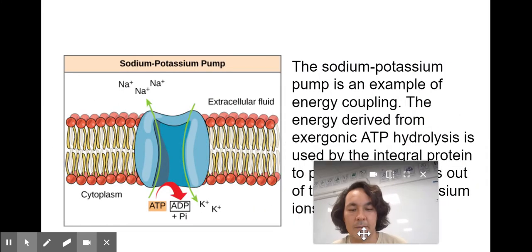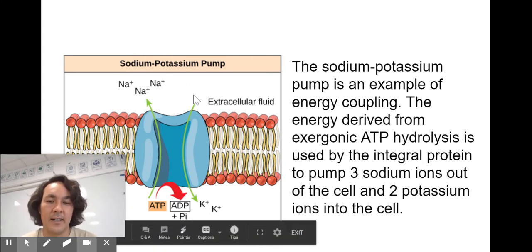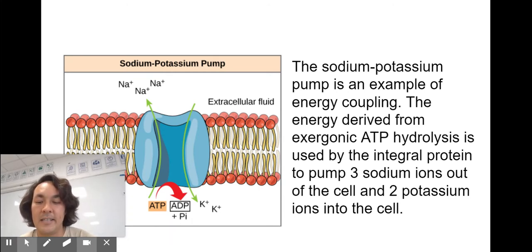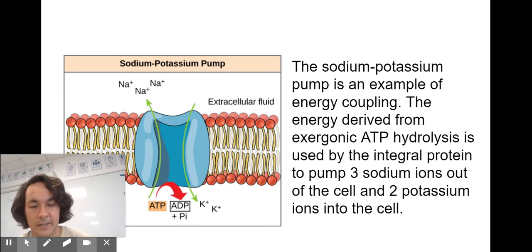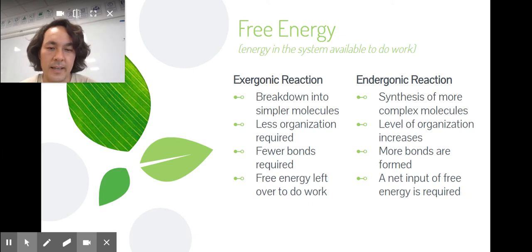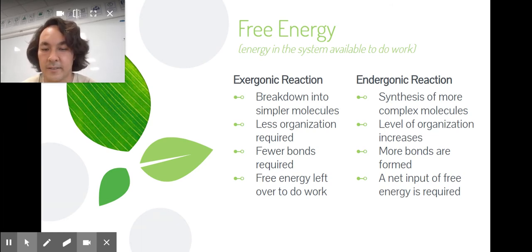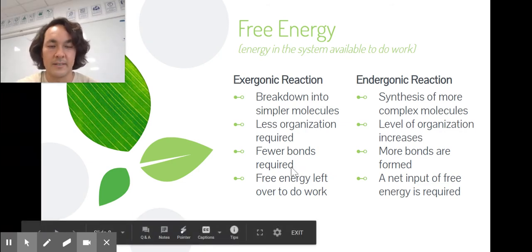An example would be the sodium-potassium pump. Here we're moving sodium against its concentration gradient, which doesn't happen without the input of energy. ATP undergoes hydrolysis and gives off energy when it loses that third phosphate to pump sodium against the concentration gradient, and likewise for potassium. Exergonic reactions break things down into simpler molecules — fewer bonds, with free energy left over to do work. If you're attuned to chemistry, these actually make stronger bonds in their products.